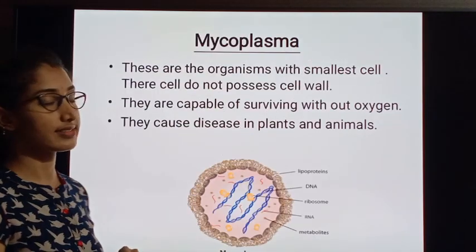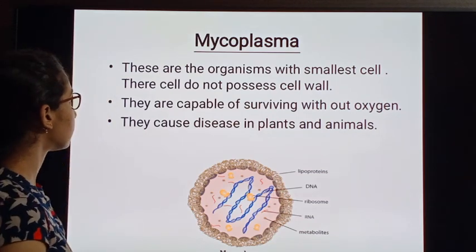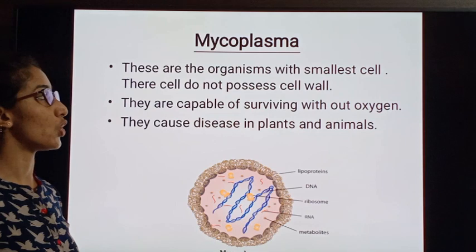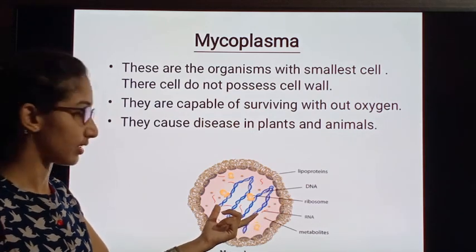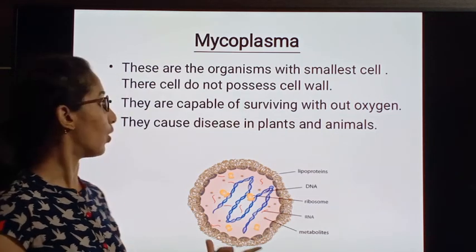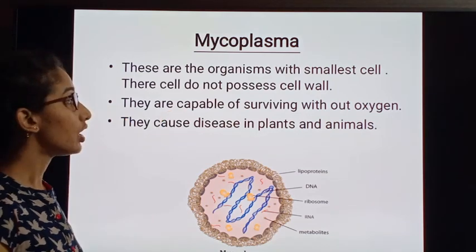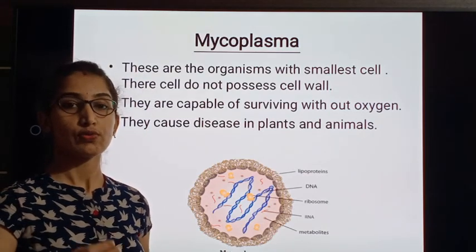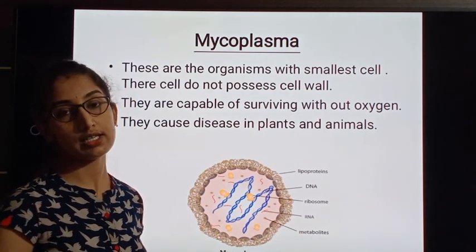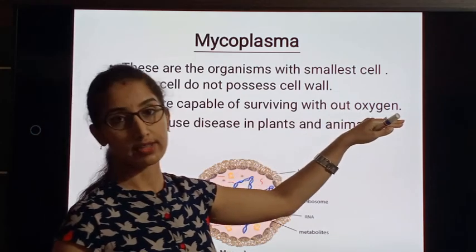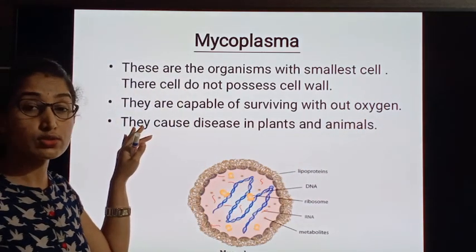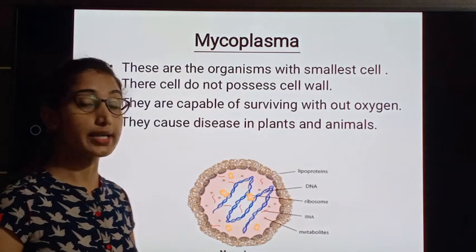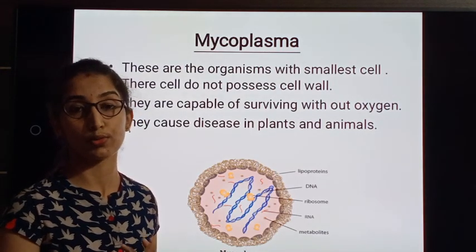Next we shall see mycoplasma. These are organisms with the smallest cell, and their cells do not possess a cell wall. Mycoplasma do not consist of a cell wall, and they are capable of surviving without oxygen. Some bacteria require oxygen for survival, but mycoplasma do not require oxygen for their survival. They can also cause diseases in plants as well as animals, so mycoplasma are harmful to both.